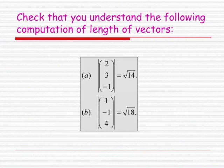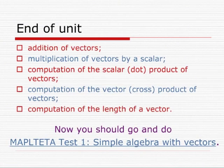Check that you understand how to calculate the length of vectors on these two examples where you have the answers below. You've reached the end of the unit — well done! You have been able to practice addition of vectors, multiplication of vectors by a scalar, computation of the scalar or dot product, the vector or cross product, and the length of a vector. Now you should go and do the first Maple TA test: simple algebra with vectors.